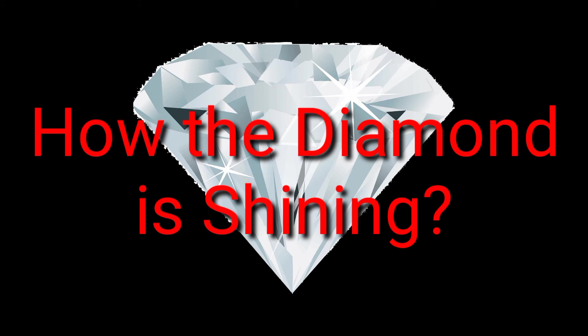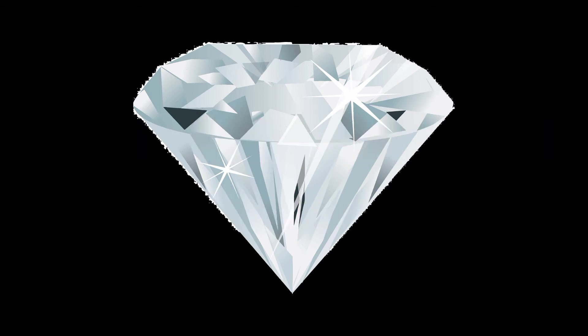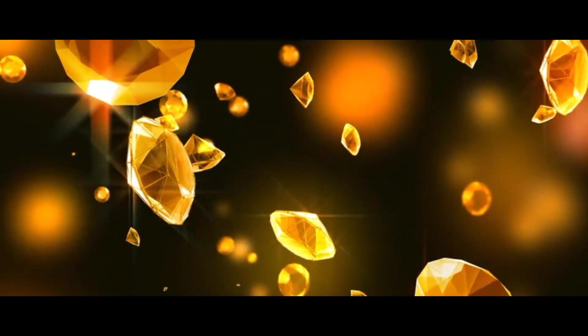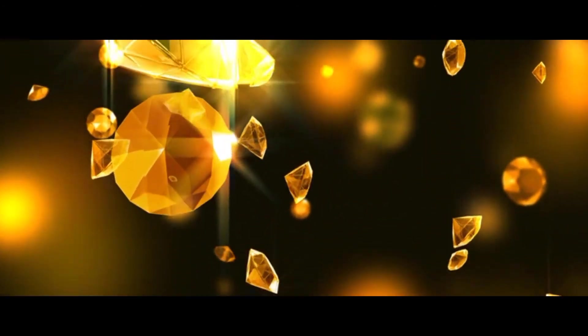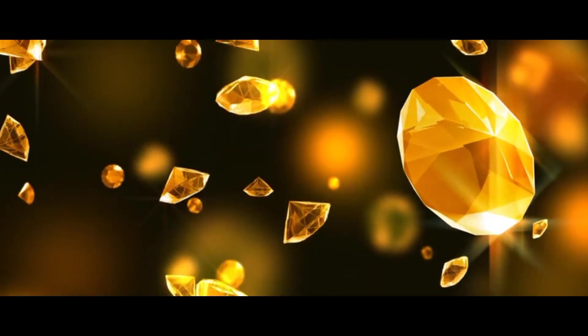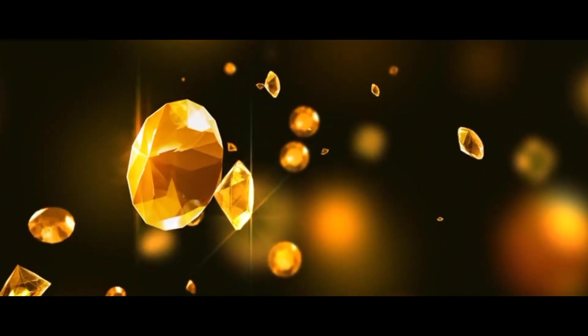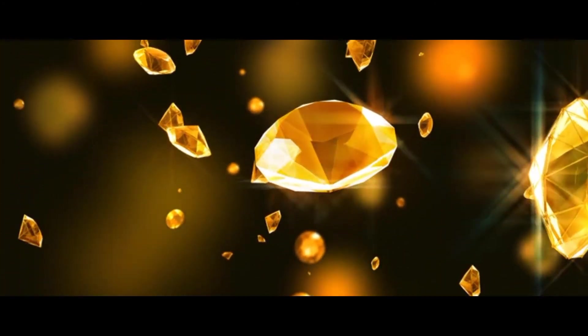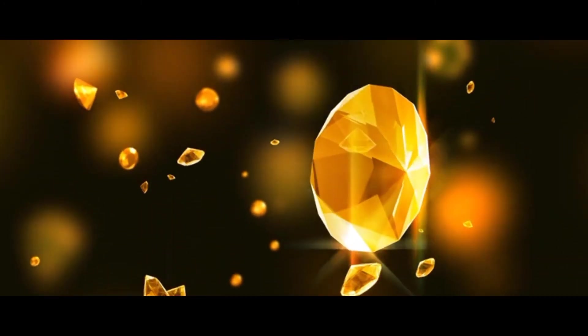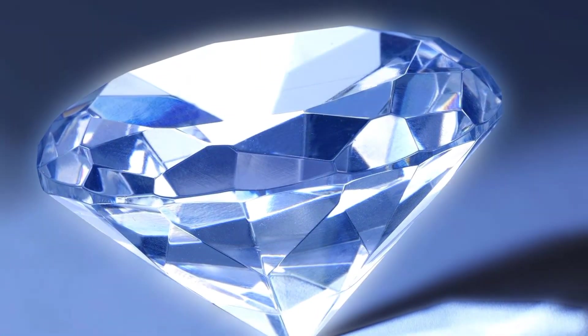How does the diamond shine? The critical angle of diamond is very low due to higher refractive index. If a light ray enters a diamond, it undergoes multiple total internal reflections which makes the diamond shine.